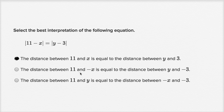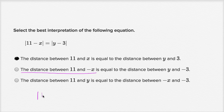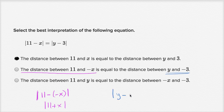Let's look at the other choices. The second choice says the distance between 11 and negative x is equal to the distance between y and negative 3. The distance between 11 and negative x would be the absolute value of 11 minus negative x, which simplifies to the absolute value of 11 plus x — which is not what we have. And the distance between y and negative three would involve y minus negative three, which is also not what we have. So this is not what this equation represents.